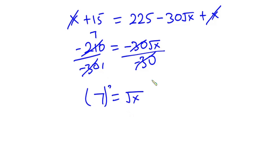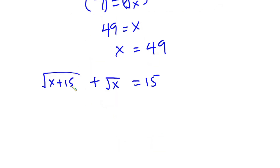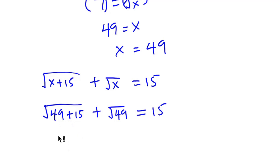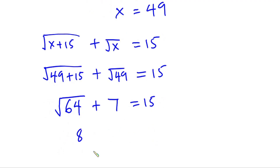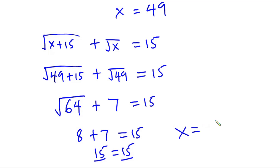Squaring each side, we get x equals 7 squared, which is 49. To verify, we plug 49 into the original equation: square root of (49 + 15) plus square root of 49 equals square root of 64 plus 7, which is 8 plus 7 equals 15. Since the left-hand side equals the right-hand side, x equals 49 is confirmed as the solution.